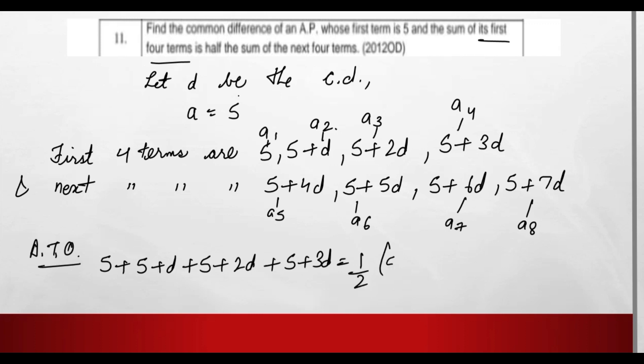The sum of next four terms, it means 5+4d + 5+5d + 5+6d + 5+7d. Now we will solve.